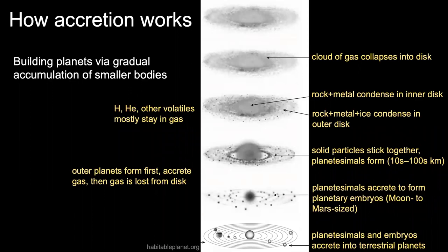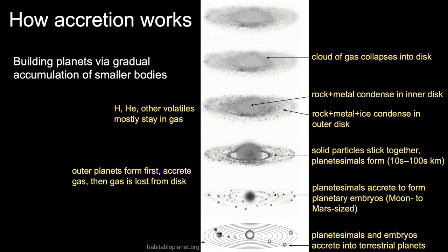To start with a brief overview of how accretion works: we start with a cloud of gas, which then collapses into a disk as the proto-sun begins to form at the center. As the gas cools, solids begin to condense out of it. In the inner part of the disk where temperatures are higher, rock and metal condense. In the outer part where temperatures are lower, you condense rock, metal, and ice. The most volatile stuff like hydrogen and helium stay in the gas. Over time, these solid particles stick together and form gradually larger bodies until we form what we call planetesimals.